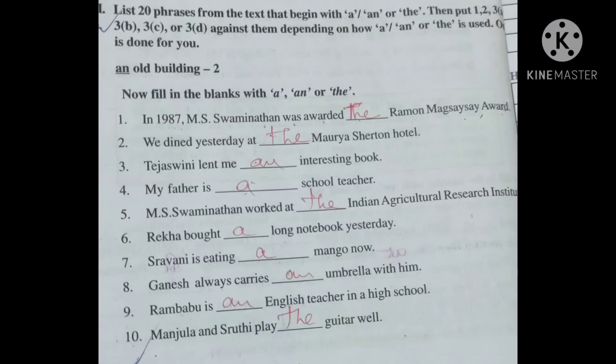Now see here children, fill in the blanks with a, an or the. First one: In 1987, M.S. Swaminathan was awarded the Raman Magsaysay Award. Second one: We dined yesterday at the Mauryan Sheraton Hotel.